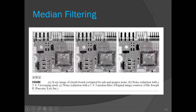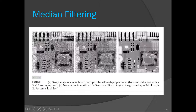Here is the example. This circuit board image is extremely corrupted by salt-and-pepper noise. The second image is the result of the averaging filter — as you can see, after applying the averaging filter, that noise is very much dissolved in the image and we were unable to remove it. But after applying the median filter with a three by three mask, the salt-and-pepper noise can be easily removed.